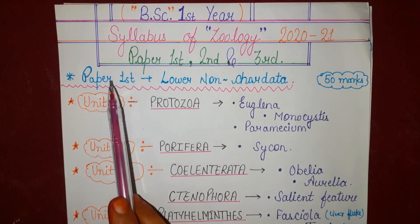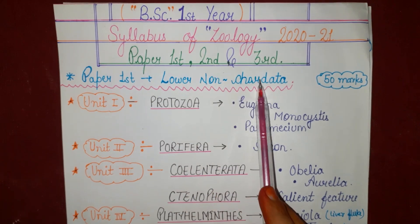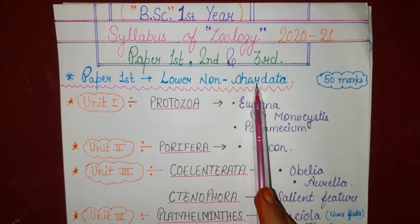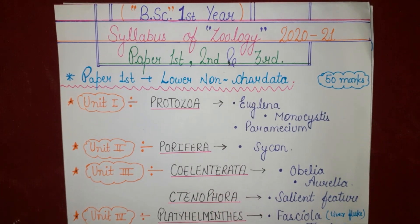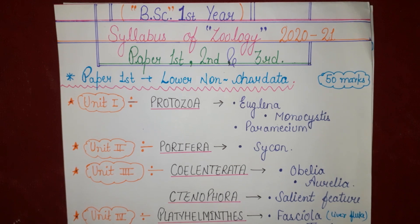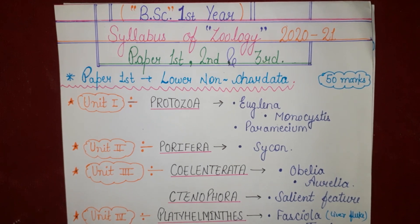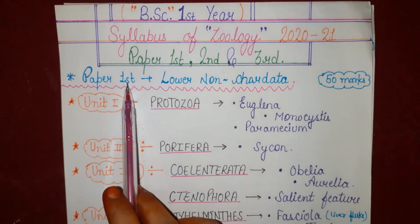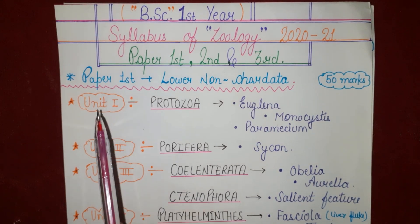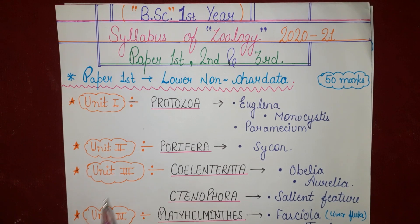Inside Paper 1st, we will study Lower Non-Chordata. Non-Chordata means animals in which notochord is not found. Paper 1st is categorized into 4 units.